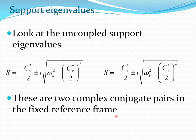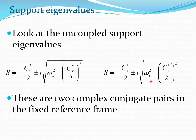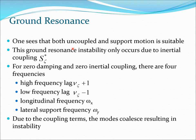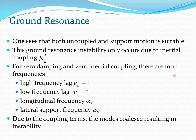Now let's look at the uncoupled support eigenvalues. We have c_x and c_y corresponding to damping in the body system, and omega_x and omega_y corresponding to frequencies in the body system. These are two complex conjugate pairs in the fixed reference frame for the support motion. Both uncoupled lag and support motions are stable. Ground resonance instability only occurs due to the inertial coupling term s_zeta_star. Without coupling the instability would not be present.